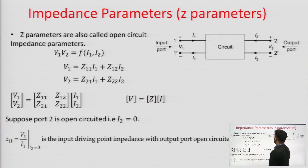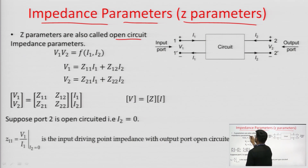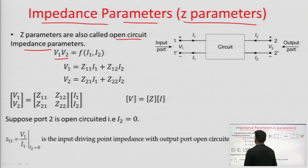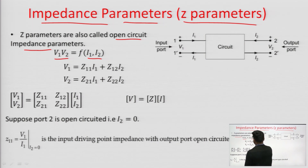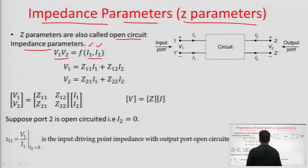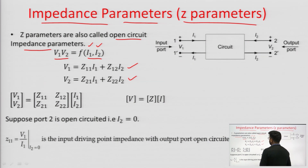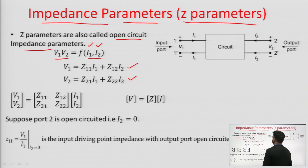Z parameters are also called open circuit impedance parameters — we will see why they are called open circuit. The dependent quantities are V1 and V2, the voltages at port 1 and port 2, and the independent quantities are I1 and I2, the currents at port 1 and port 2. The equations are: V1 = Z11·I1 + Z12·I2, and V2 = Z21·I1 + Z22·I2, where Z11, Z12, Z21, and Z22 are the Z parameters.